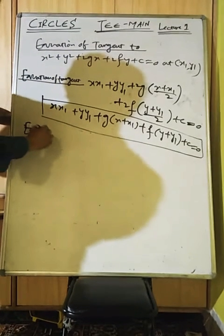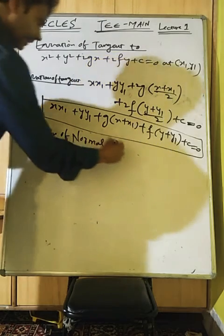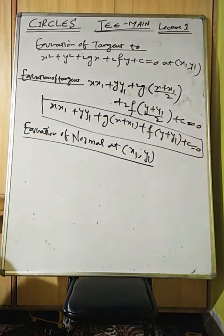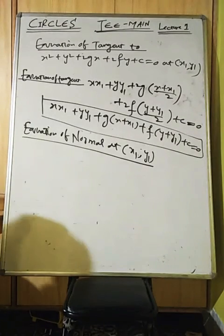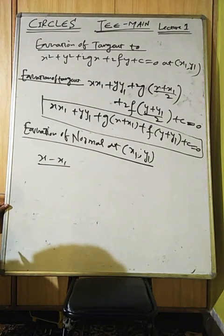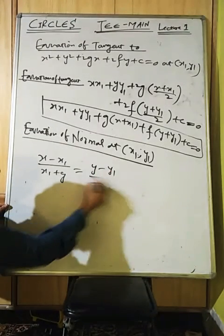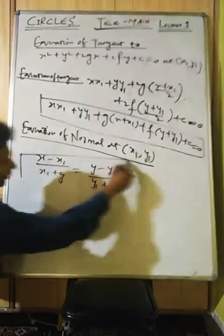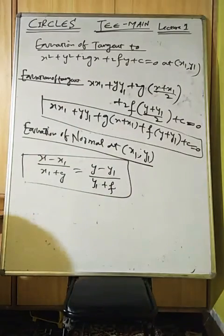Similarly, the equation of normal to the general circle at point (x₁,y₁) is: (x−x₁)/(x₁+g) = (y−y₁)/(y₁+f).